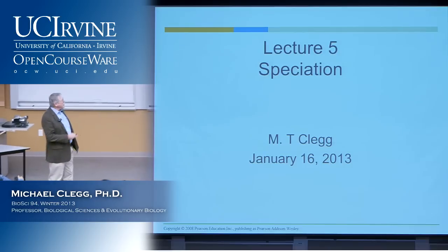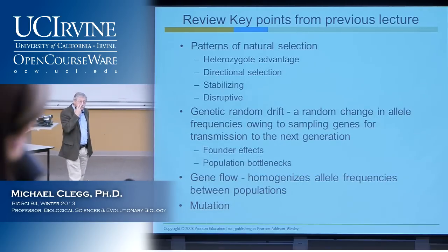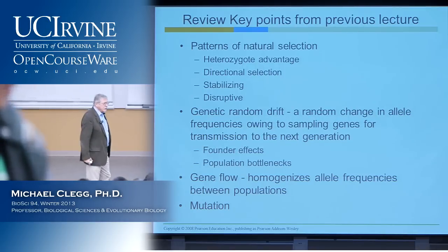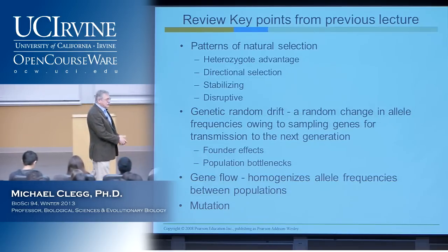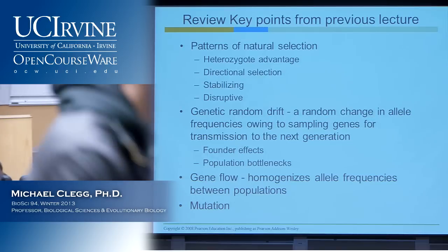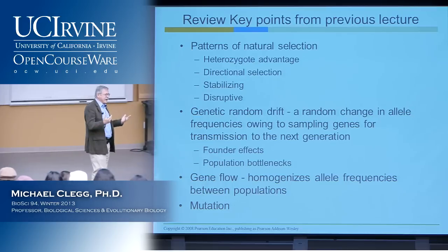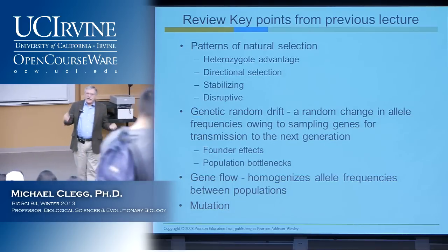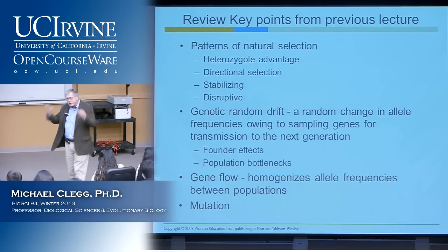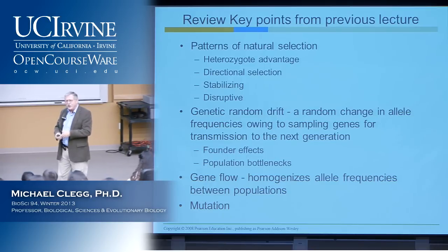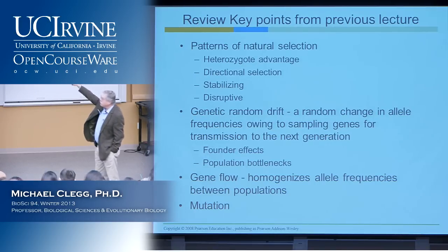We will pick up where we left off on Monday and start with a brief review of the topics we emphasized then. We talked about the patterns of natural selection and mentioned there were several. This is a straightforward classification of the different ways natural selection might work — a human intellectual construct imposed on the natural world. We divided natural selection into a series of different possibilities.